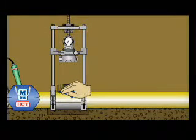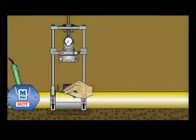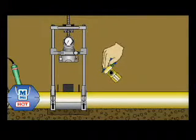Following a few easy steps creates a saddle fusion joint. Both the surface of the fitting base and the pipe surface are cleaned and abraded to remove any oxidation.